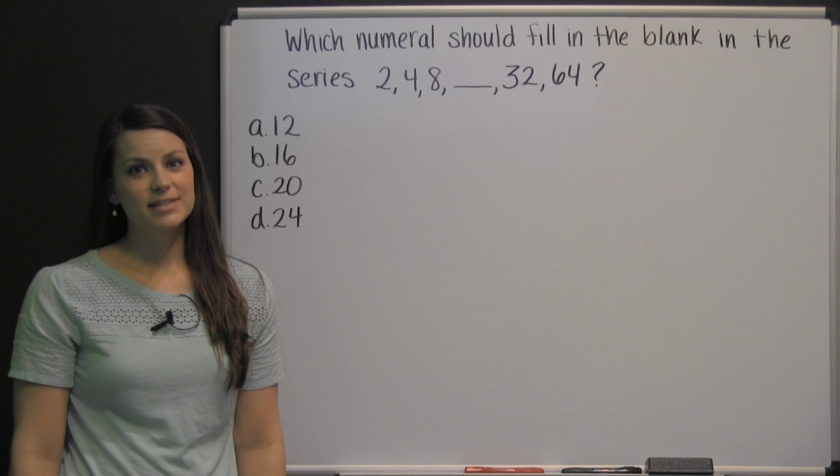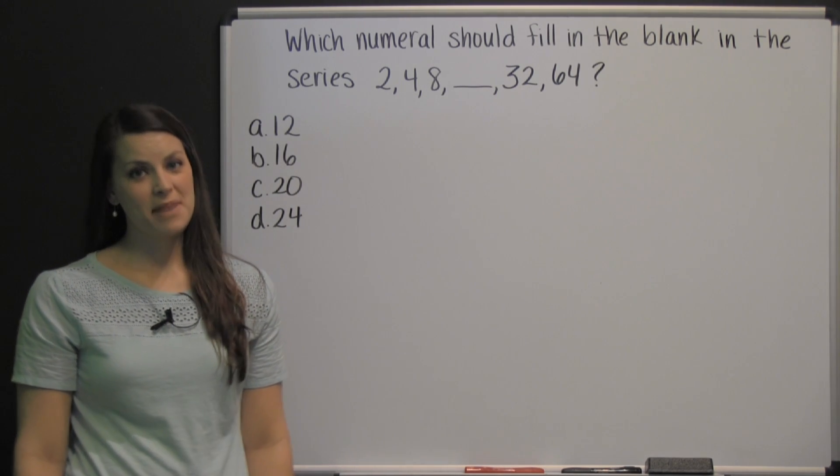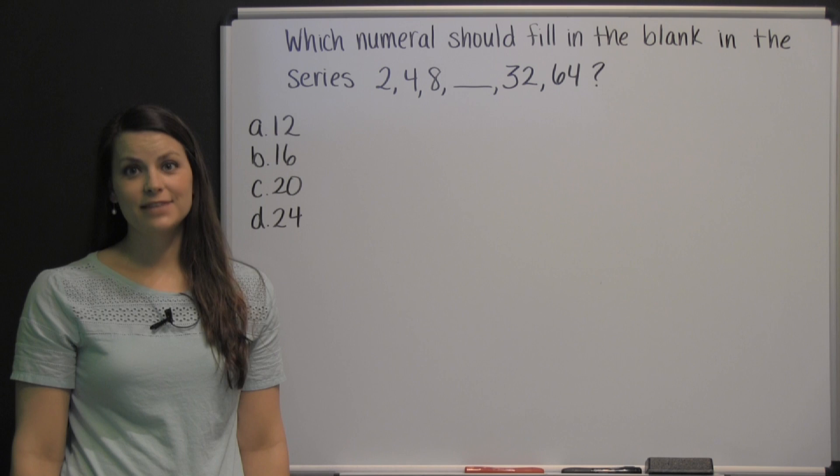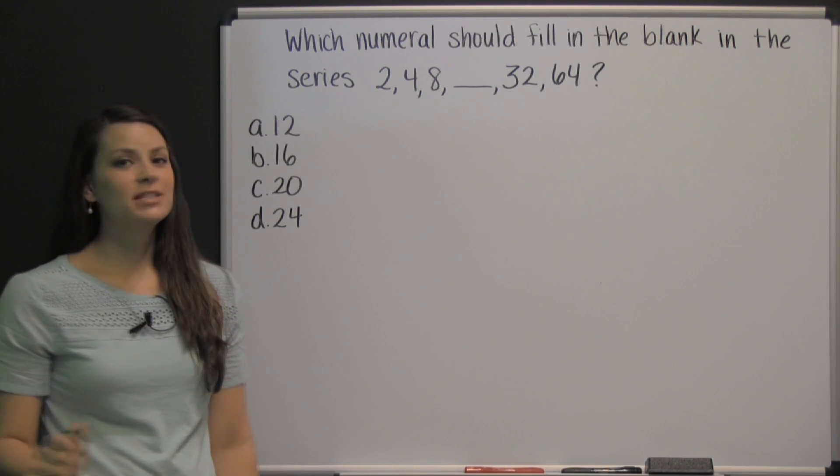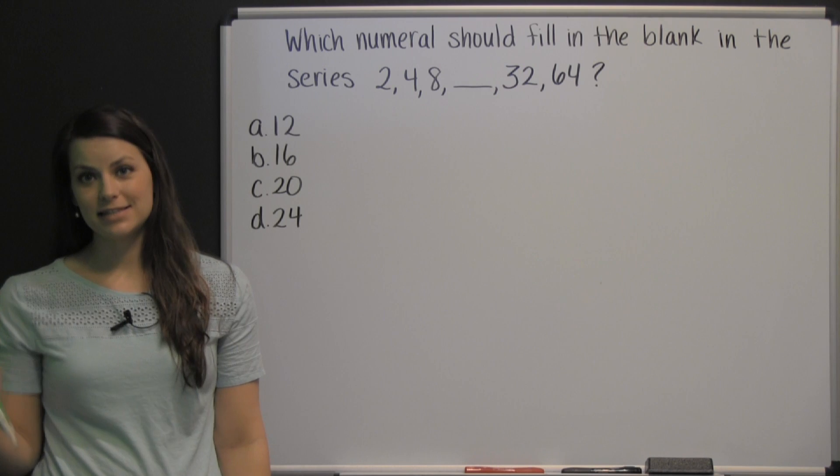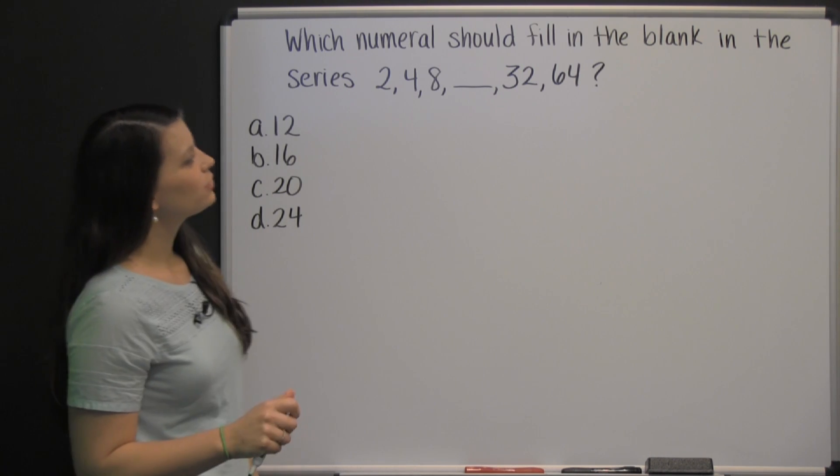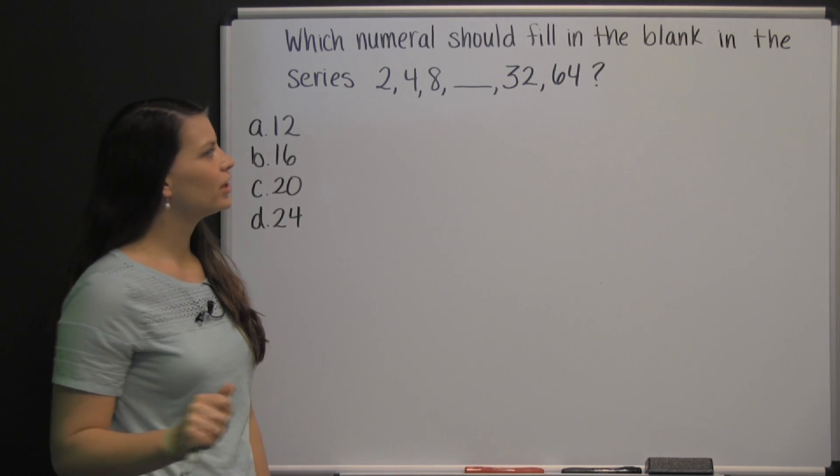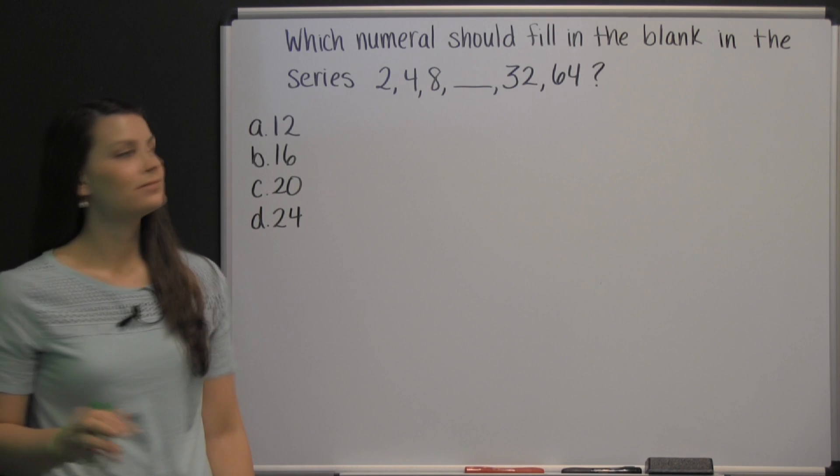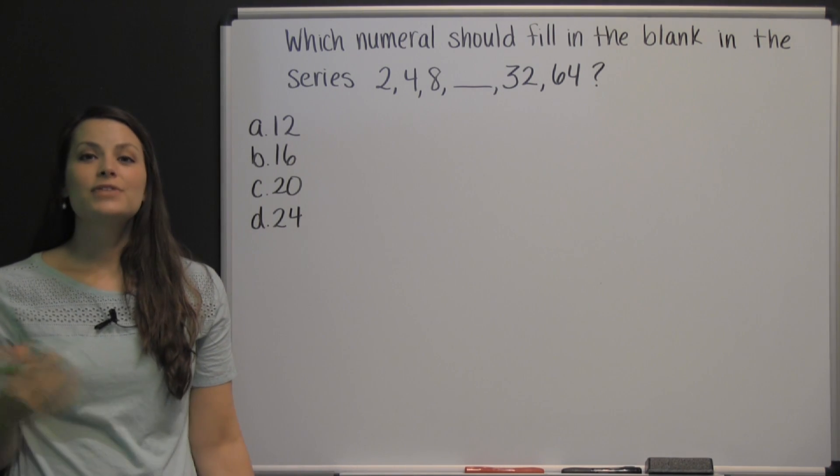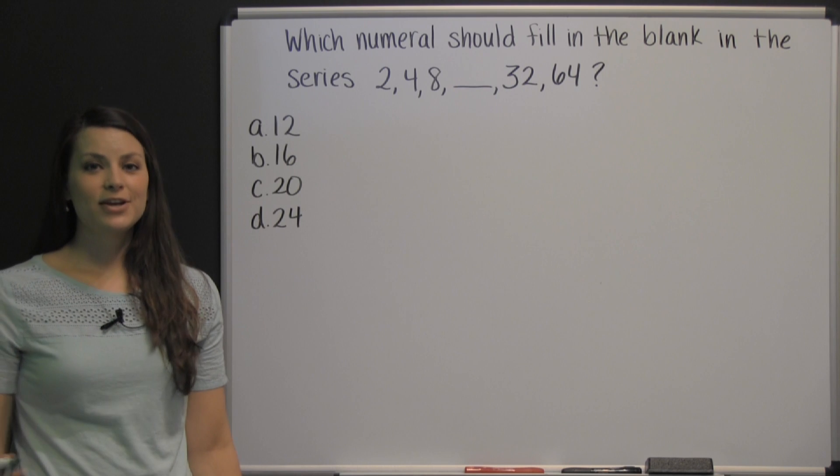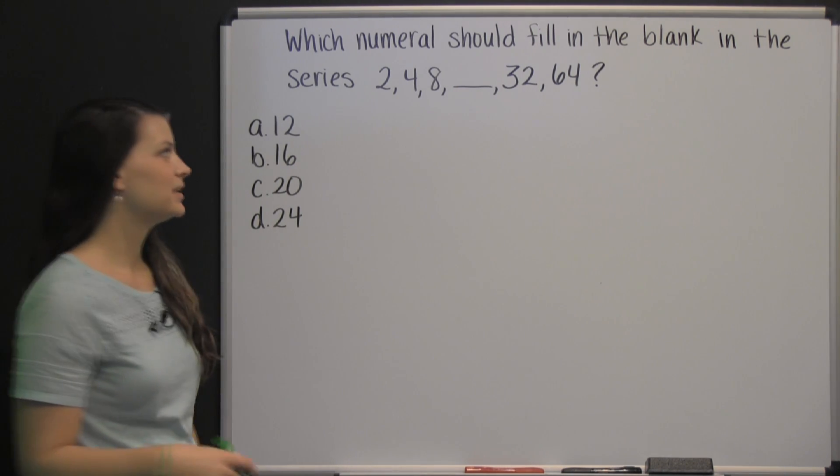The HSPT has two different math sections. One of them is the quantitative skills section. This is a question from an HSPT practice test. Which numeral should fill in the blank in the series 2, 4, 8, blank, 32, 64? So this is a pattern. We need to figure out the pattern to figure out the missing number.